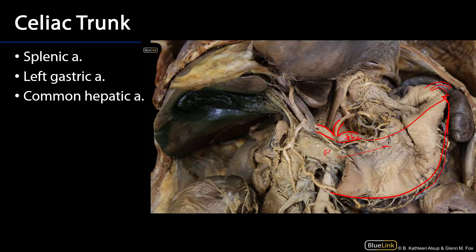The next branch of the celiac is the left gastric. The left gastric heads for the lesser curvature of the stomach to supply it with blood. Then we have the common hepatic artery, which has two terminal branches: the gastroduodenal artery and the hepatic artery proper. The hepatic artery proper will typically give off the right gastric artery, which heads towards the lesser curvature of the stomach to anastomose with the left gastric artery.